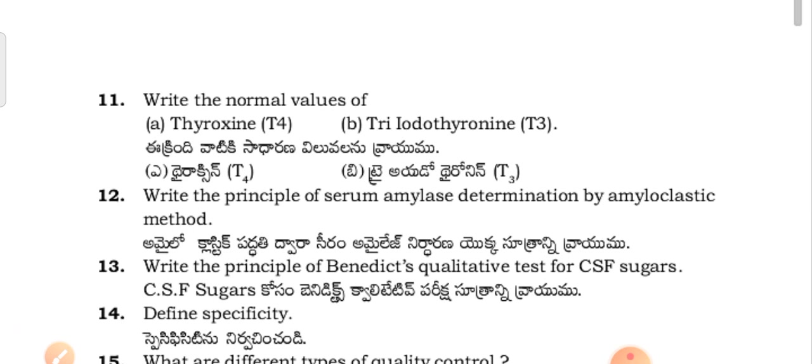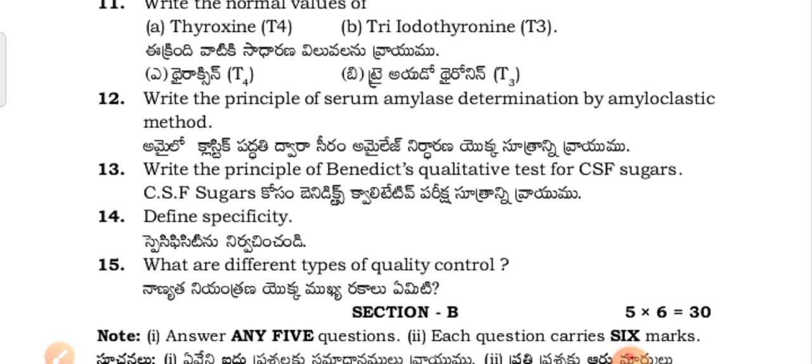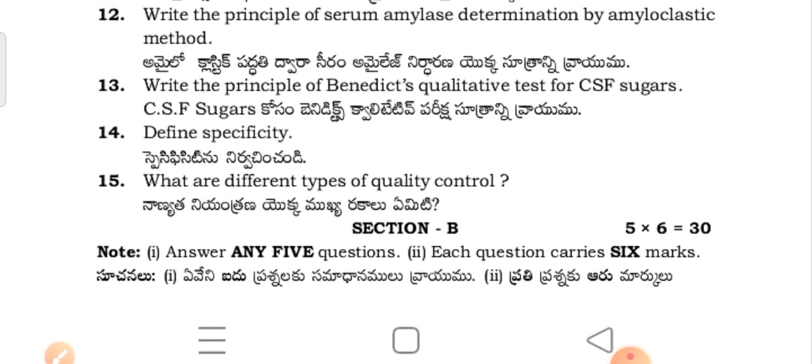Write the normal values of thyroxin (T4), triiodothyronine (T3). Write the principle of serum MLS determination by MLO classic method. Write the principles of Benedict's qualitative test for CSF sugar. Define specificity.